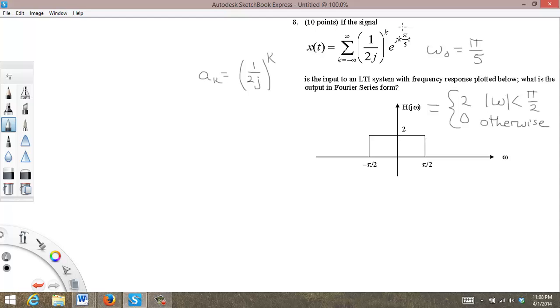So now we look at our Fourier series. We have k times pi over 5. So when k is equal to 0, we have omega is equal to 0. When k is equal to 1, we have omega equal pi over 5.